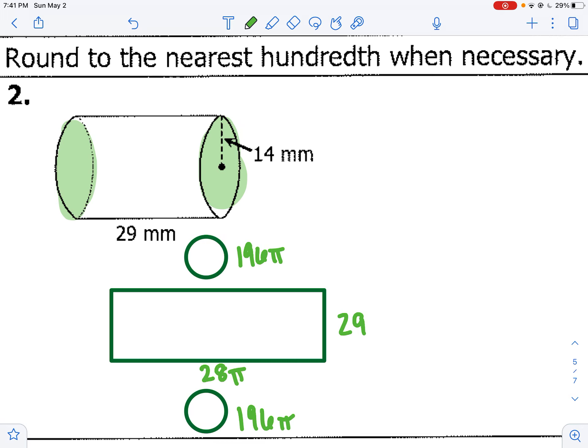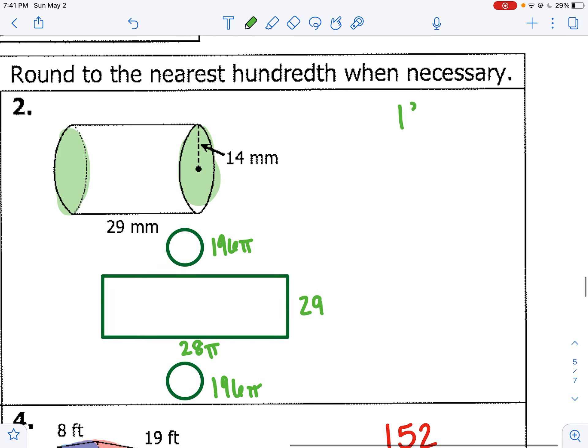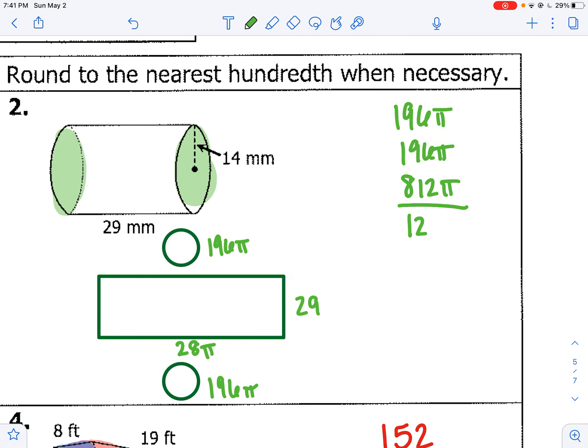So my three areas are 196 for the top, 196 pi for the bottom. And if I do 28 times 29 to simplify, that's 812. But don't forget about that pi that was with the 28 pi. So if you add all those up, it's 1204 pi square millimeters.